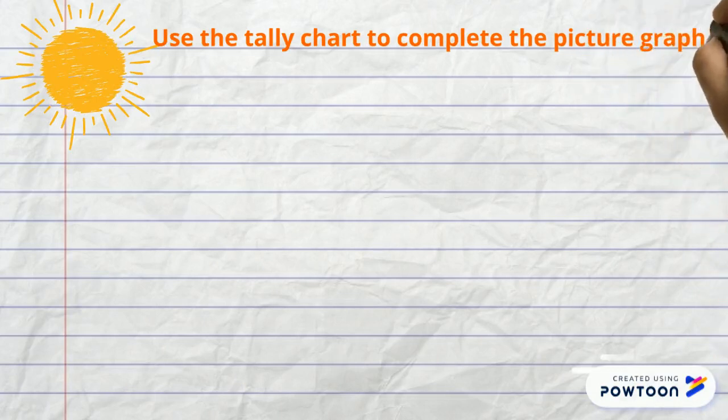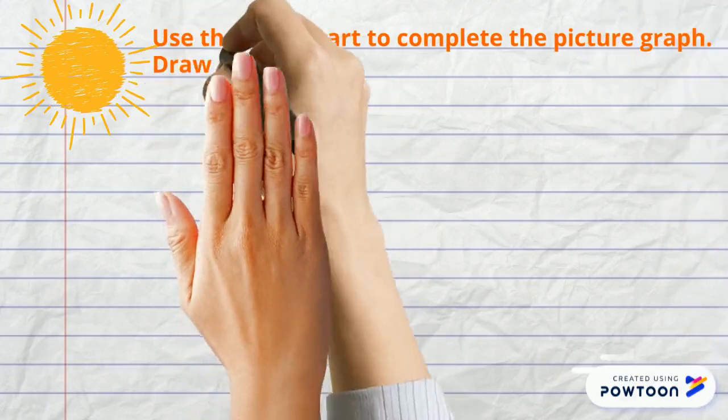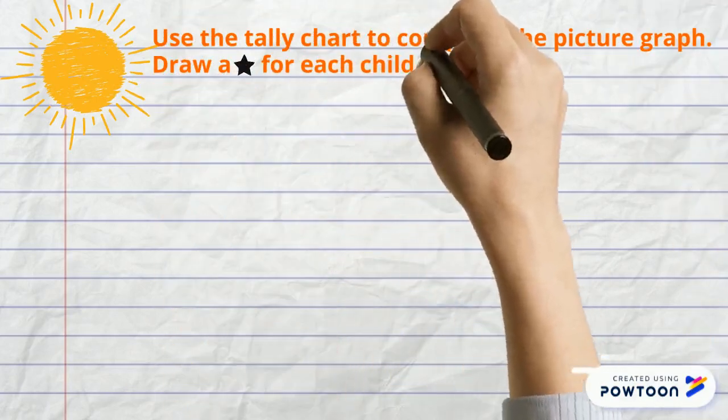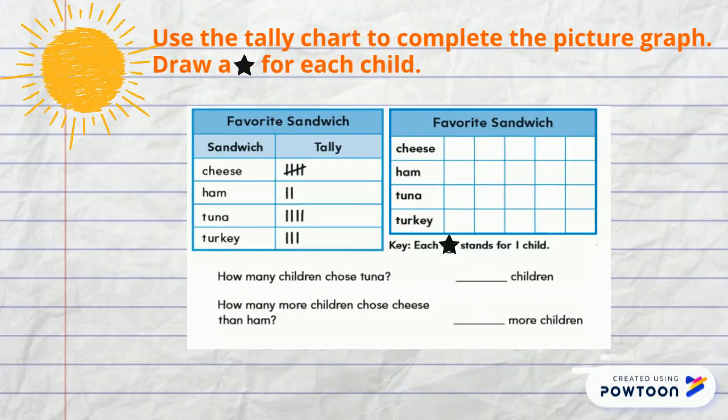We are going to add a star for each choice. This tally chart is about types of sandwiches: cheese, ham, tuna, and turkey.